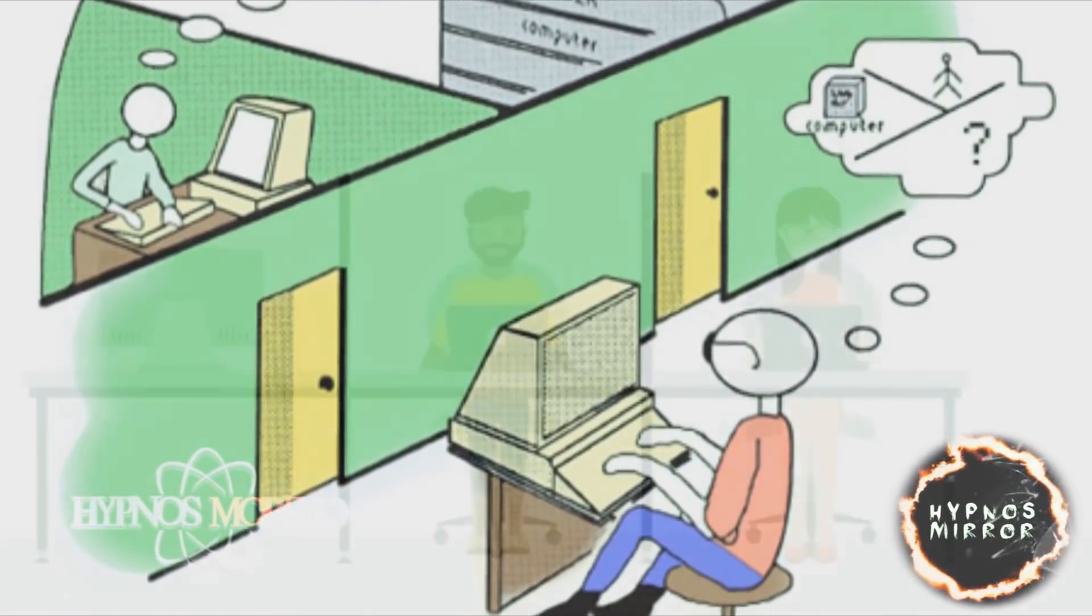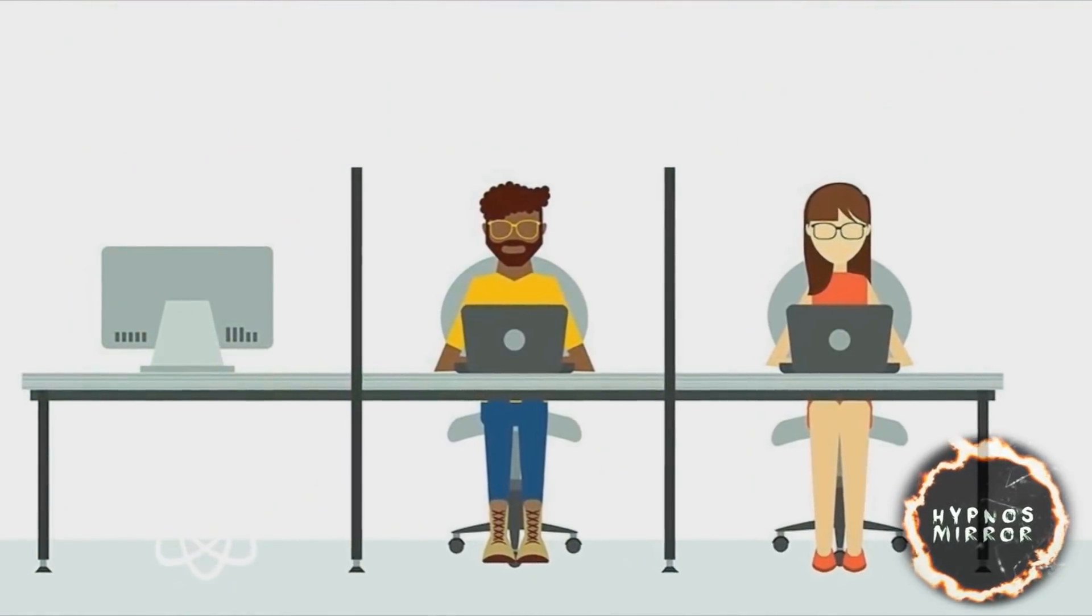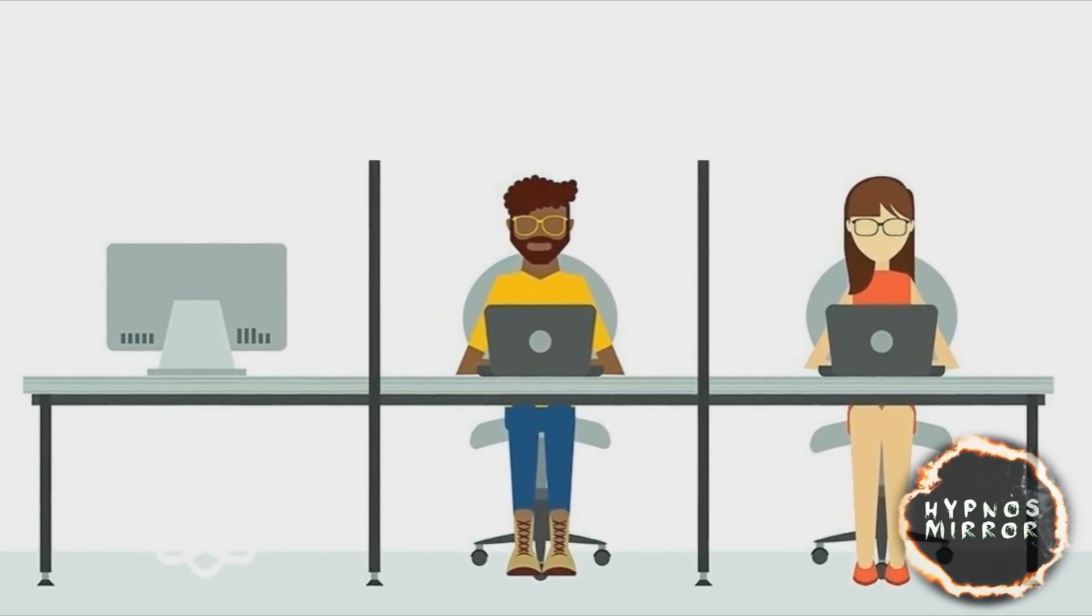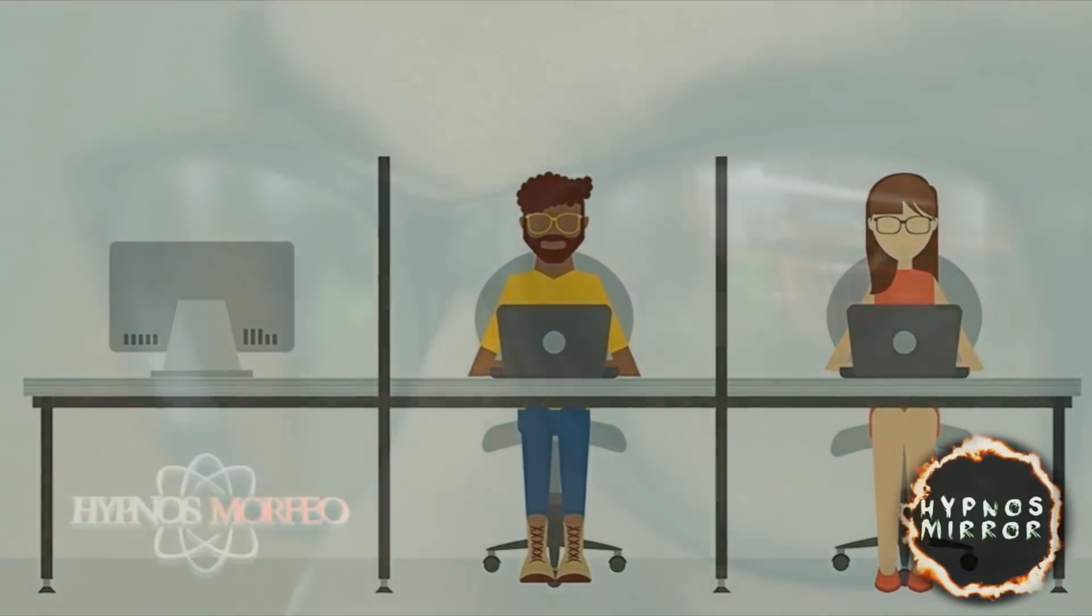But one of the two participants who was communicating through text would not be human. It would be the machine. The main participant has to determine which of the two other participants is the machine and which is a human.